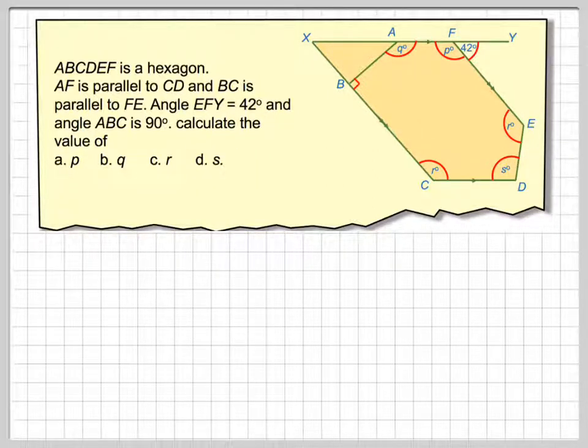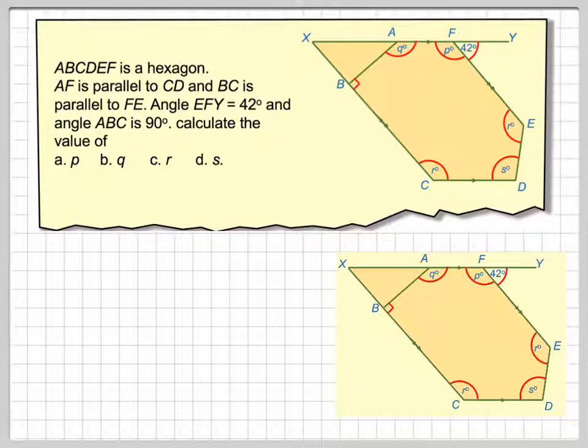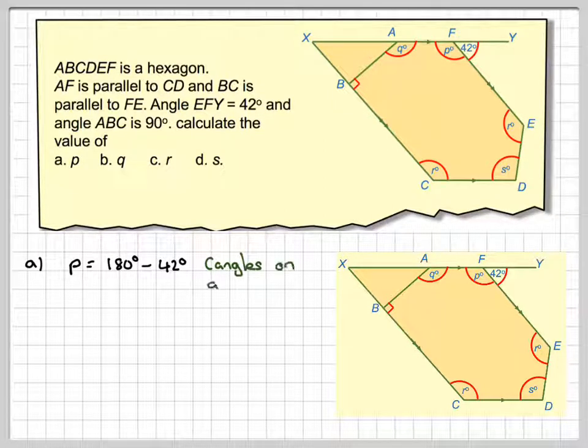Calculate the value of P, Q, R, and S. Taking the diagram, P is going to be 180 minus 42 because these two angles are on a straight line. So P will be equal to 138.